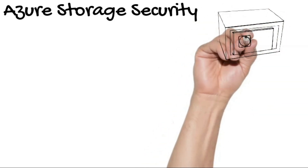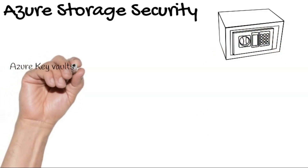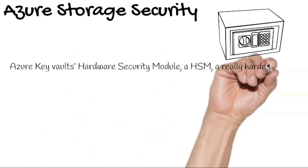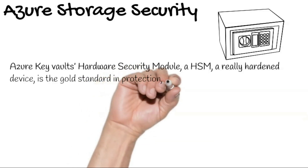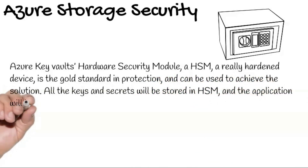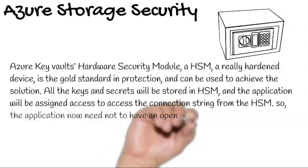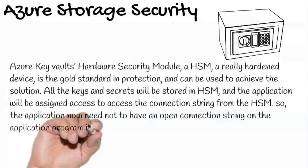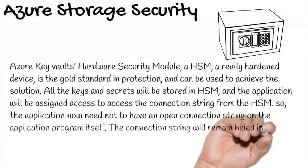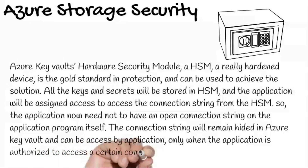Azure Key Vault's hardware security module, or HSM, is a really hardened device and is the gold standard in protection. All the keys and secrets will be stored in the HSM, and the application will be assigned access to retrieve the connection string from the HSM. The application no longer needs to have an open connection string in the application program itself. The connection string remains hidden in Azure Key Vault and can only be accessed by the application when it is authorized to access a certain connection string.